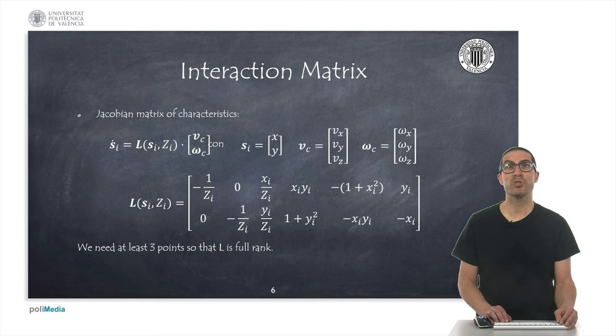Therefore, we can express the homogeneous coordinates as a linear relationship obtaining a Jacobian matrix, also known in the field of visual feedback control as the interaction matrix. For each point of the image i, we will have a Jacobian matrix of two rows and six columns.